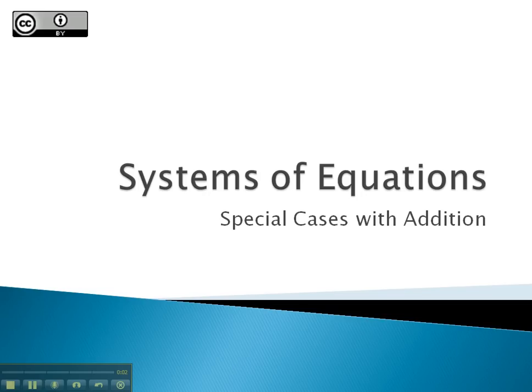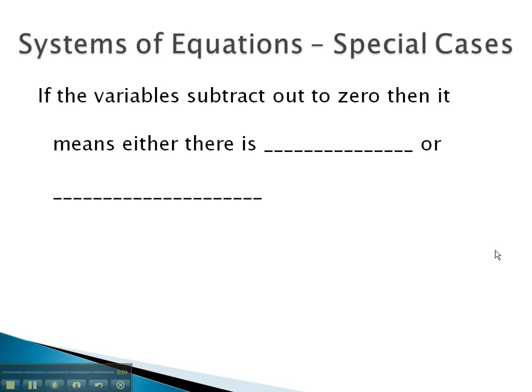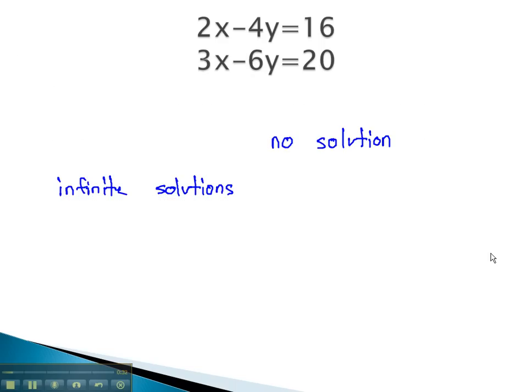In this video, we will take a look at some special cases that can occur as we use the addition method. When we combine the equations together, if the variables subtract out to zero, it means there is either no solution or there may be infinite solutions that make the system true. Let's take a look at some examples where we can see this work out.